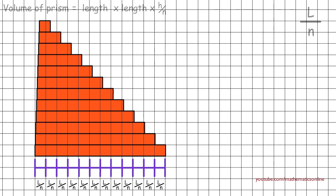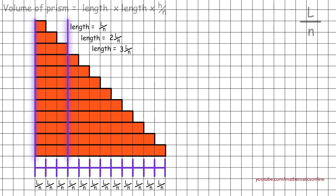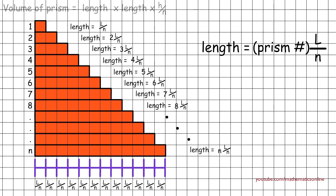If we line up all the rectangular prisms at one end, we can see that the first prism has a length of l over n. The second prism has a length of l over n plus l over n, which simplifies to 2l over n. The third prism has a length of 3l over n. As we continue, the length increases in the same pattern all the way to the last prism, which has a length of n times l over n. Therefore the length of each prism equals the prism number times l over n.